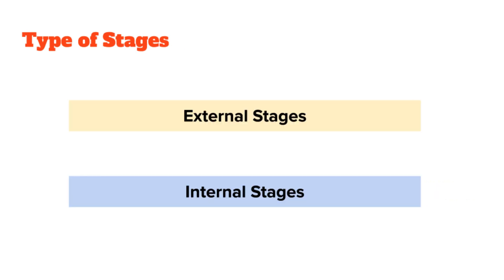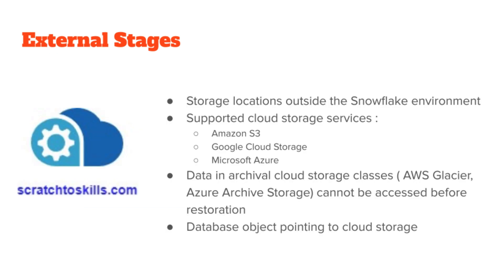There are two main types of Snowflake stages: external stages and internal stages. External stages are locations outside of the Snowflake environment, often in cloud storage services like Amazon S3, Azure Data Lake Storage, or Google Cloud Storage. They are used for accessing data files stored in external sources and integrating them with Snowflake. External stages facilitate data ingestion from various external sources, making it easier to bring data into Snowflake for analysis and processing.